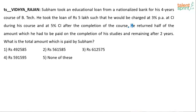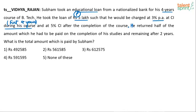In the case of compound interest, for the first four years he has taken an education loan for four years. He took the loan of rupees 5 lakhs — that is the principal amount. The rate of interest is not fixed; it is varying. It is 3% per annum during his course, meaning for the first four years, and after that it is going to be 5% per annum after completion of the course.